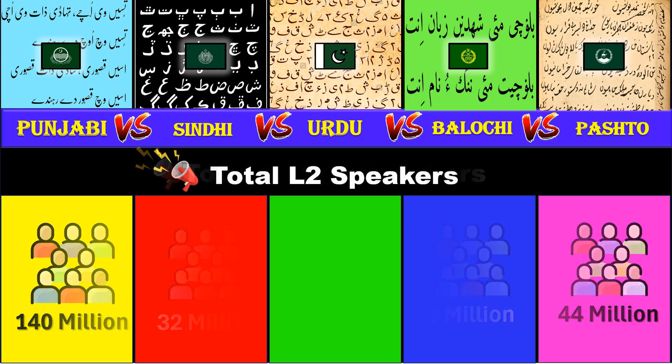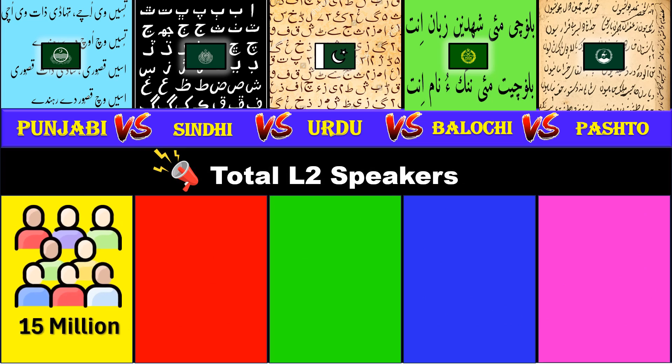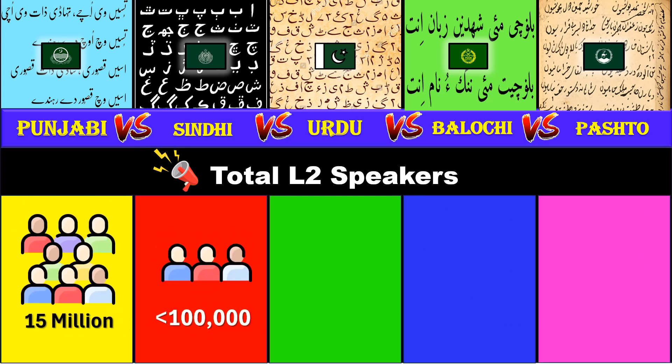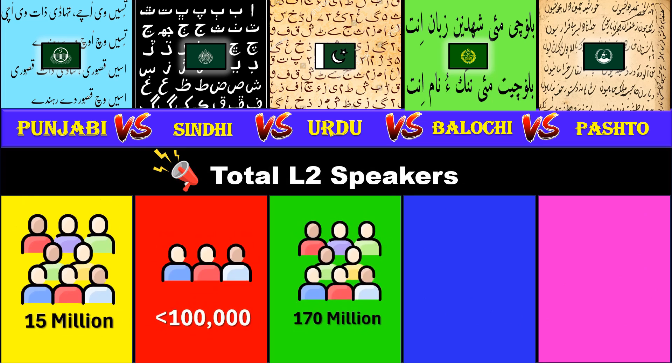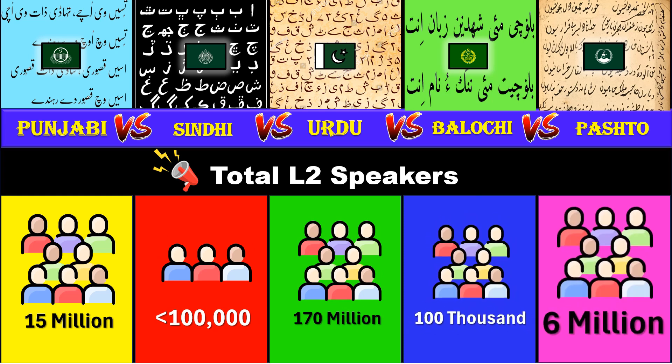Total second language speakers. Punjabi: 15 million. Sindhi: 100,000. Urdu: 170 million. Balochi: 100,000. Pashto: 6 million.